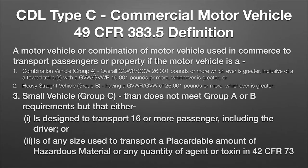Roman numeral II says: is of any size and used to transport placardable amounts of hazardous material, or quantities or agents or toxins defined in 42 CFR Part 73. For this, we're really just going to be talking about that placardable amount. When it requires placards, it's going to be a Group C type vehicle — the smaller vehicles.